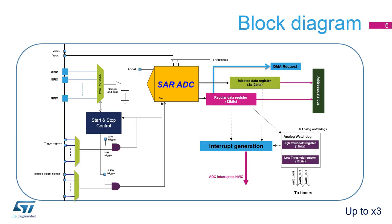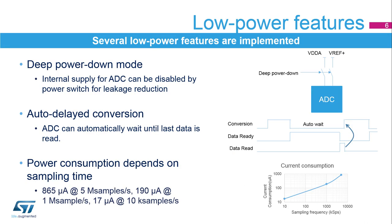This slide shows the general block diagram for analog-to-digital converters embedded in the STM32L4. The STM32L4's ADCs support a deep power-down mode. When the ADC is not used, it can be disconnected by a power switch to further reduce the leakage current. Auto-delayed mode makes the ADC wait until the last conversion data is read before starting the next conversion, avoiding unnecessary conversions and thus reducing power consumption.